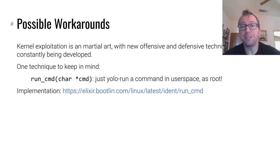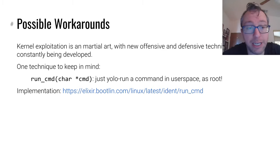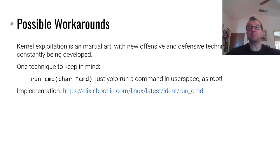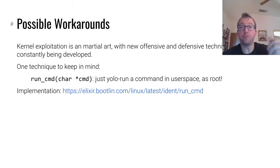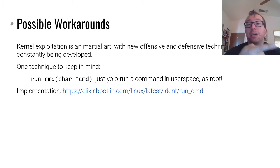But of course, all of these mitigations - kernel exploitation, like all exploitation, is a martial art. It's a slow battle between attackers and defenders, there's blocking, there's striking. New techniques are developed all the time on both the offensive and defensive side. On the offensive side, one response to SMEP is the use of the run_cmd function in the Linux kernel. run_cmd just takes a string, splits it by spaces, and runs it as root in user space. Obviously that's a very powerful primitive. It's a kernel function, so if you have kernel code execution and you can call a function with a controlled argument, run_cmd is your friend. You don't have to return to user space - you can just run a command as root.